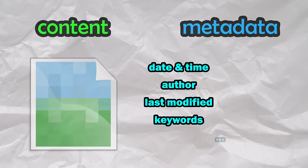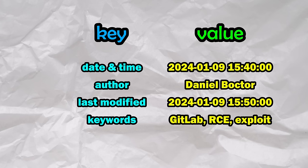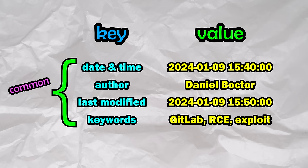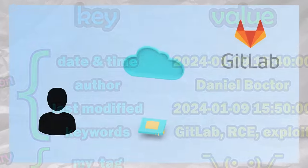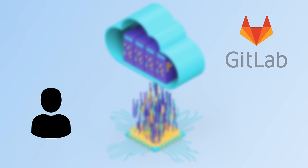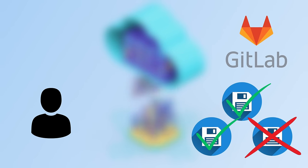Most of the time, metadata comes in the form of key-value pairs, with the keys being the tag names and the values being the associated values. In addition to the commonly defined tags, which are standardized for each file format, there is no issue with adding your own arbitrary tags to the metadata, however some services might not accept them. GitLab has a whitelist of commonly used tags which it allows to be included with file uploads, and all other ones are stripped out and discarded.